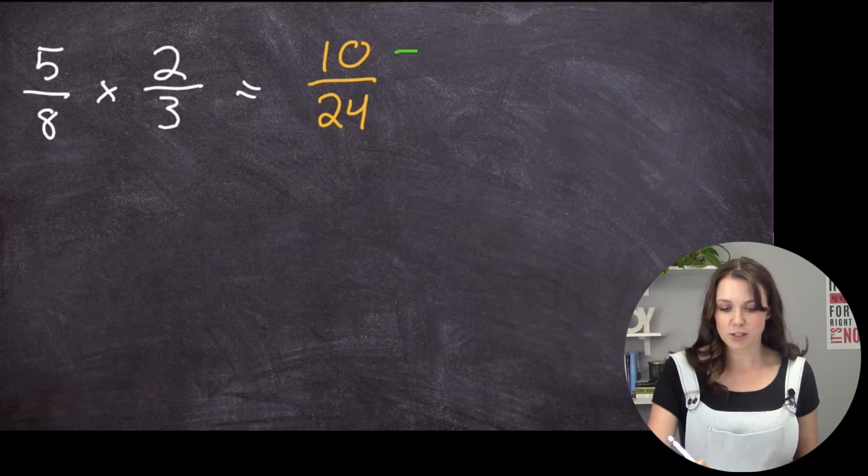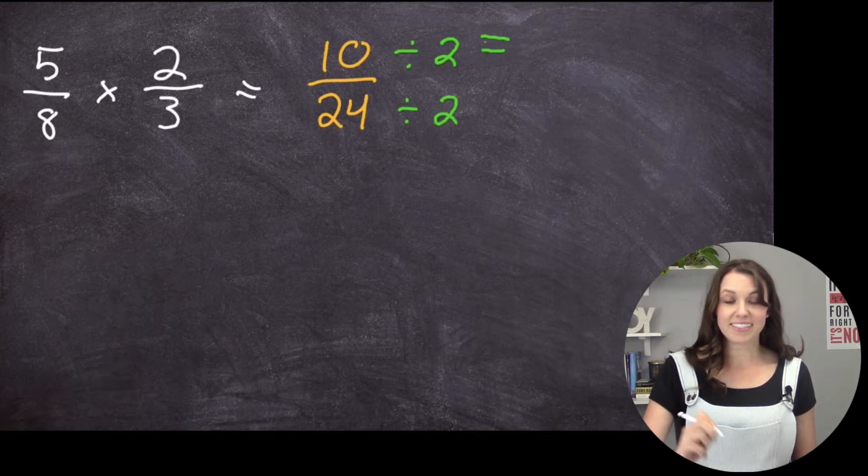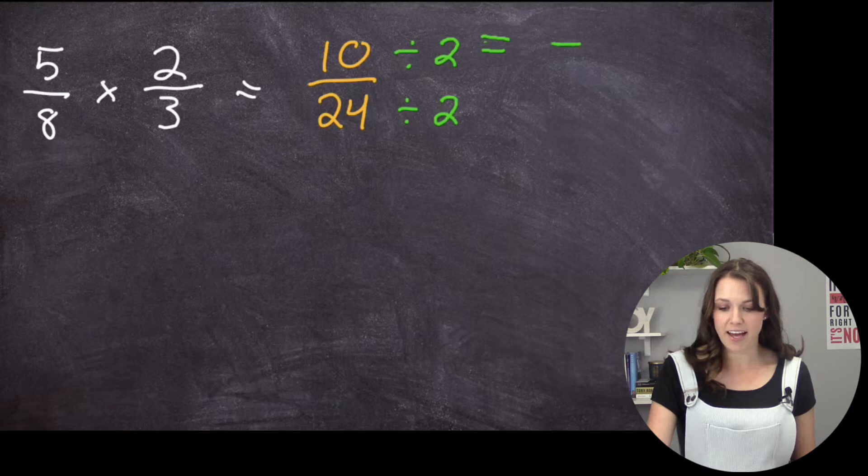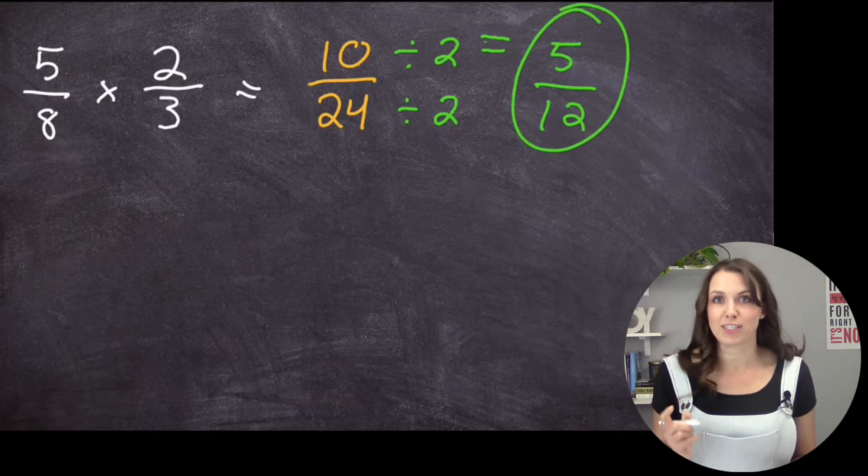is there a number that goes into 10 and 24? Yes, right? 2 goes into both of them. So I can just divide both by 2. And I get 10 divided by 2 is 5. 24 divided by 2 is 12. So that is my answer.